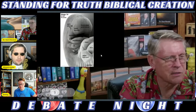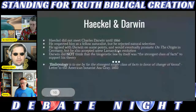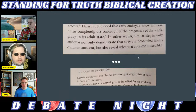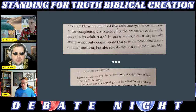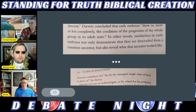Here is a screenshot from one of Kent's videos showing a micro-photograph of an embryo with pharyngeal arches marked one, two, three, four. A quote from Icons of Evolution states Darwin concluded that early embryos show us more or less completely the condition of the progenitor — that similarities in early embryos not only demonstrate common descent but also reveal what that ancestor looked like.